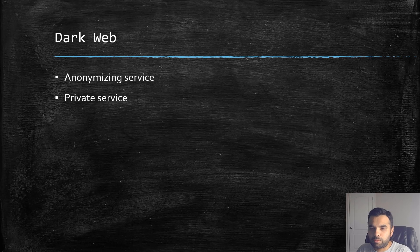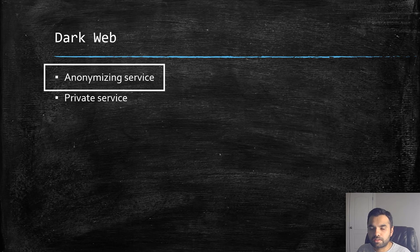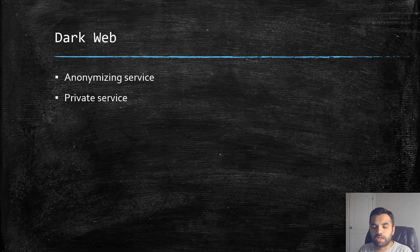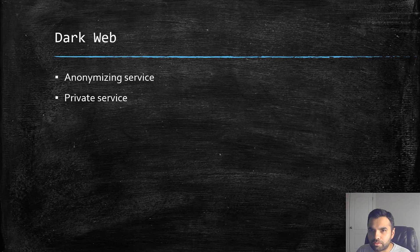To access the dark web — or what we mean by the dark web — dark web services are made up of two aspects. First, we need an anonymizing service, one that keeps everything anonymous whatever we do. Then we have to use private services. There are not many services out there that can ensure our activity remains private or anonymous, and that's why there are a very select number of services which we'll use throughout this series to show how you access dark web services.